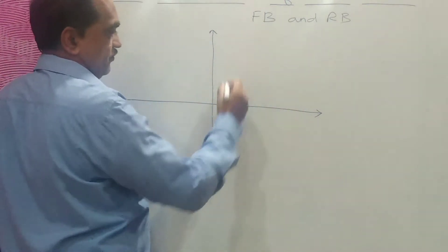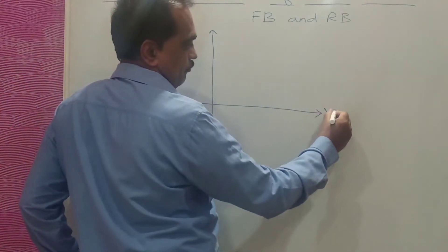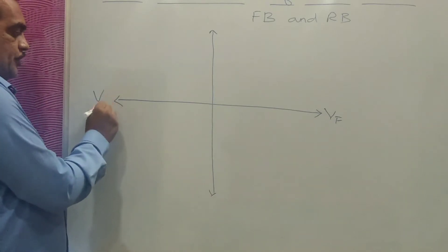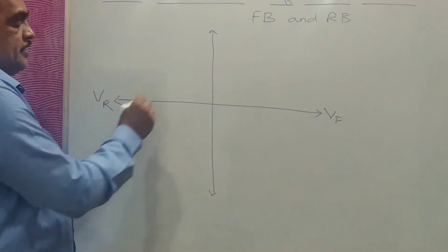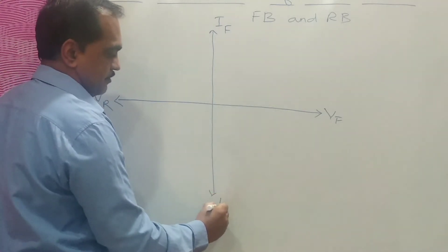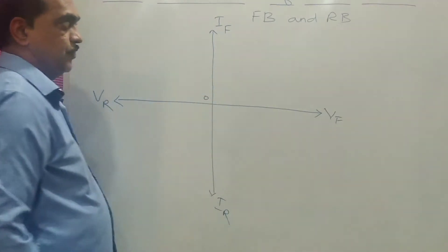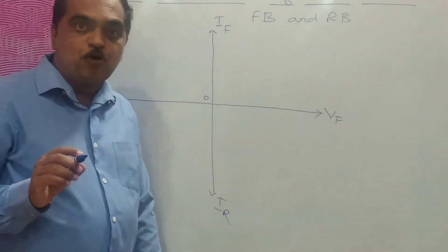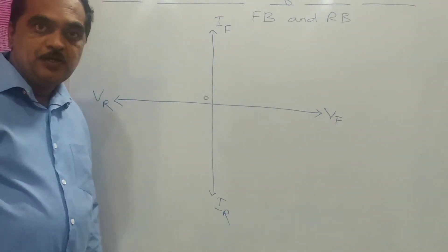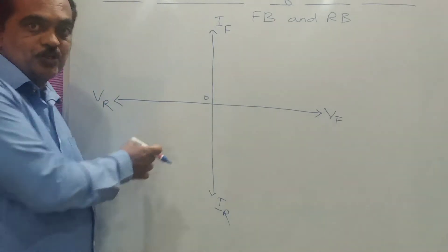This is the y-axis, this is the x-axis. This is forward voltage, this is reverse voltage, this is forward current and this is reverse current. This is zero. Now to show the forward bias characteristics, we have to use the first quadrant. And to show the reverse bias characteristics, we have to use the third quadrant.